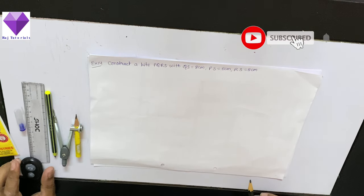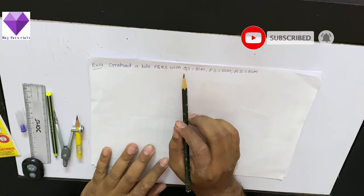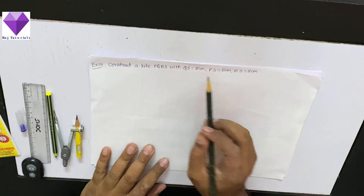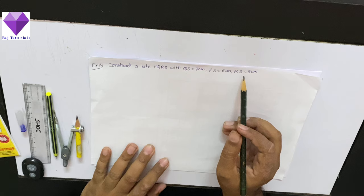Hello students, next we are going to construct a kite PQRS with sides QS equal to 8 cm, PS equal to 6 cm, RS equal to 8 cm.